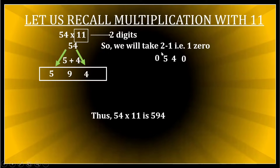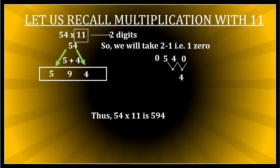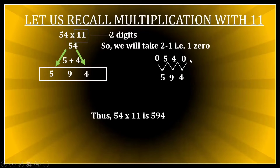Because there are two digits, I take the numbers two at a time. Four plus zero equals 4. Then five plus four equals 9. Then zero plus five equals 5. So I get 594. This is the actual method — because we're multiplying by 11 (two digits), we put one zero on each side and take two numbers at a time to get our answer of 594.